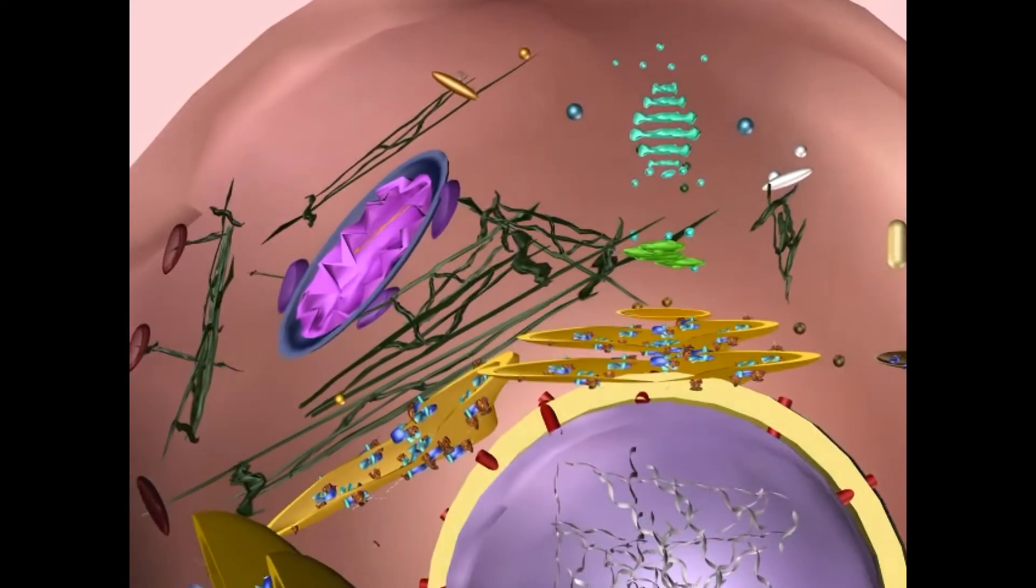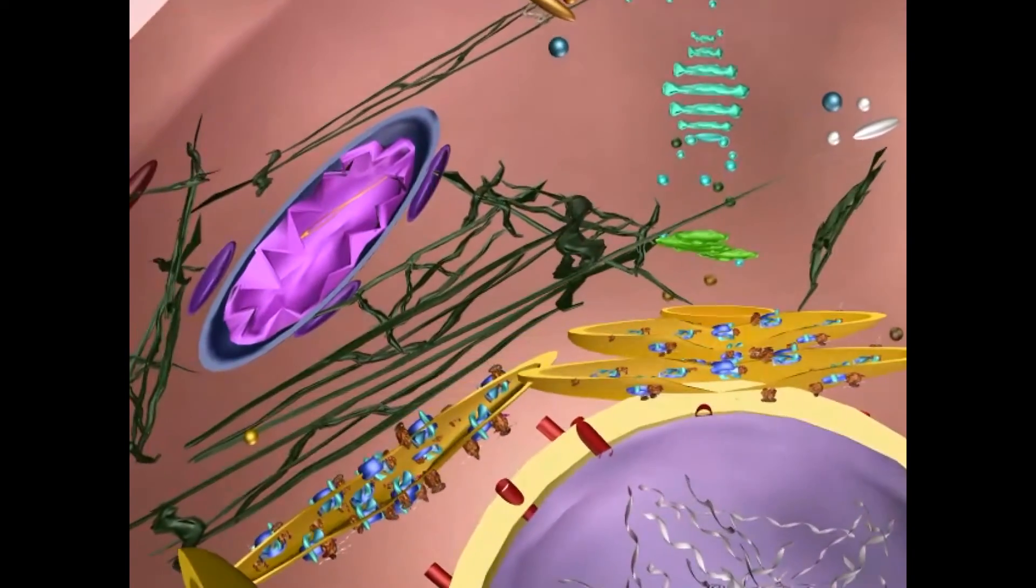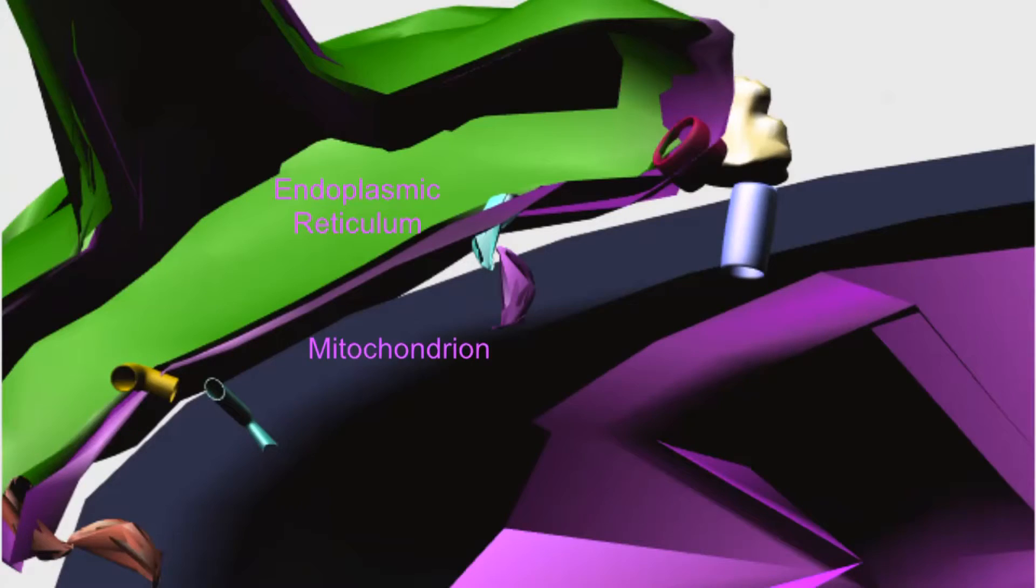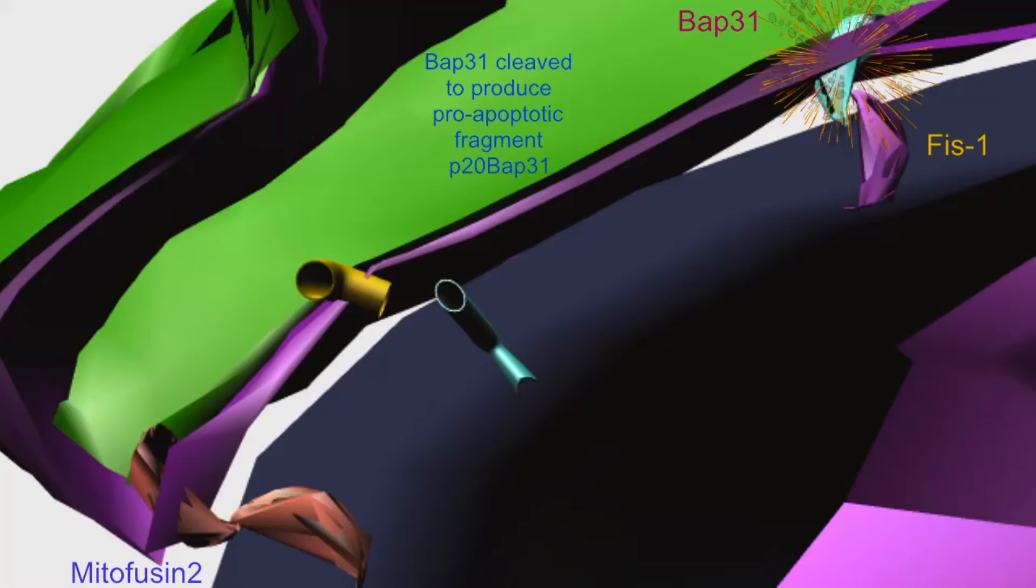As much as 20% of the surface area of mitochondria is associated with endoplasmic reticulum in specialized regions known as mitochondria-associated membranes, or MAMs. While the membranes of the ER and mitochondria do not fuse, they are tethered together by both lipids and proteins, which may be permanent or temporary, and separated by about 10 to 25 nanometers.